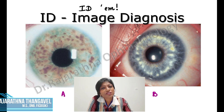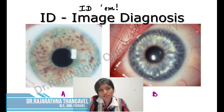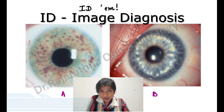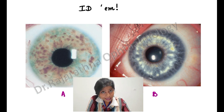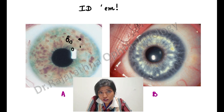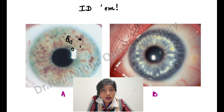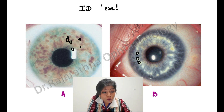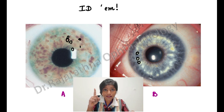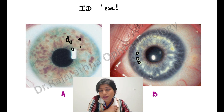Welcome to this image diagnosis. Let's identify A and B. When you look at A, you see brown colored nodules — brown colored patches. When you look at B, you see white colored ones. So the color is going to help you identify them.